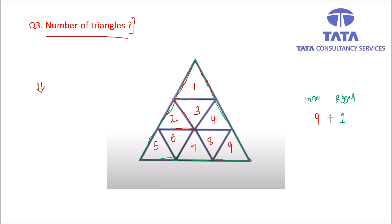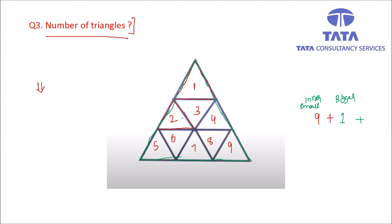We need to find more triangles. Using a different color pen — there is one triangle like this, and another triangle like this. So that is plus 1, making 11. Then I can see another triangle here — plus 1 more. So till now we have 12 triangles.